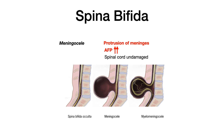In spina bifida with meningocele, we do see protrusion of the meninges. Because there's protrusion and an opening in the low back, levels of alpha-fetoprotein will be increased if measured. Importantly, in these patients the spinal cord is undamaged — even though something is protruding, it's just the meninges, not the spinal cord itself. The spinal cord is still in the canal where it's supposed to be; it's just the meninges that are protruding through.